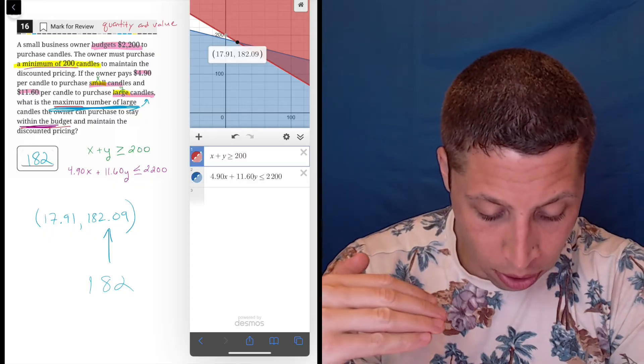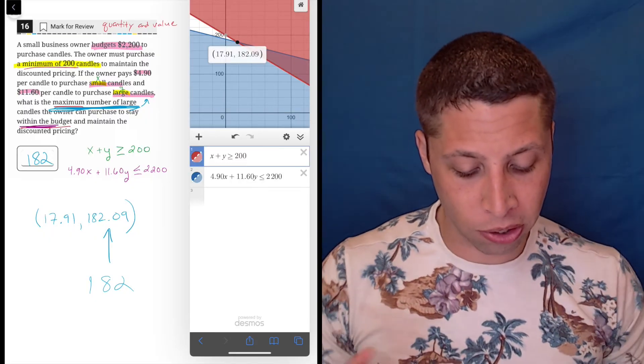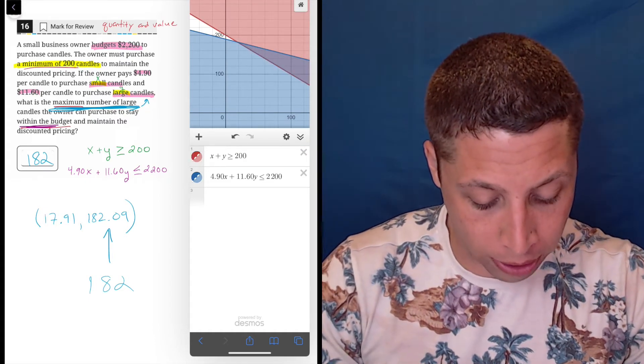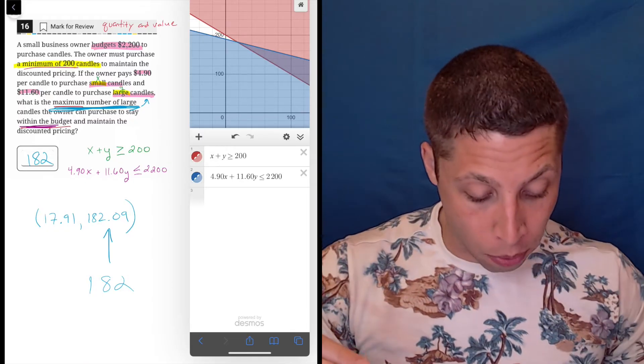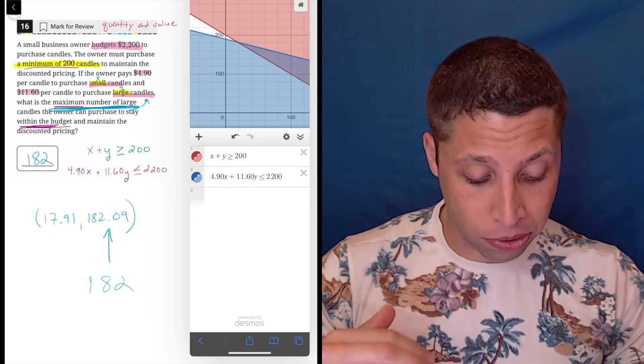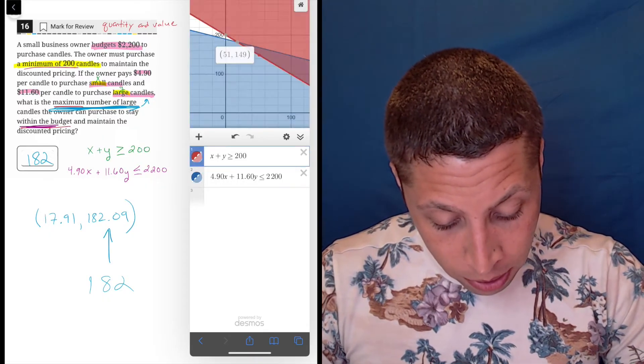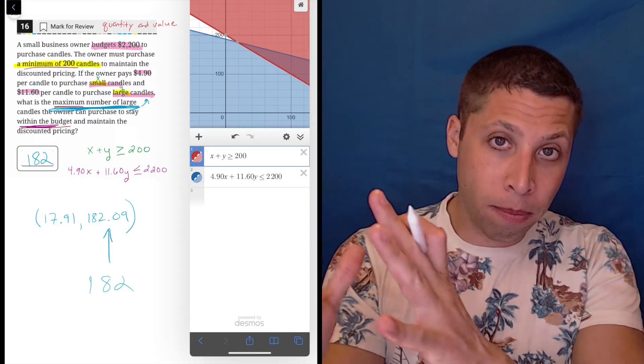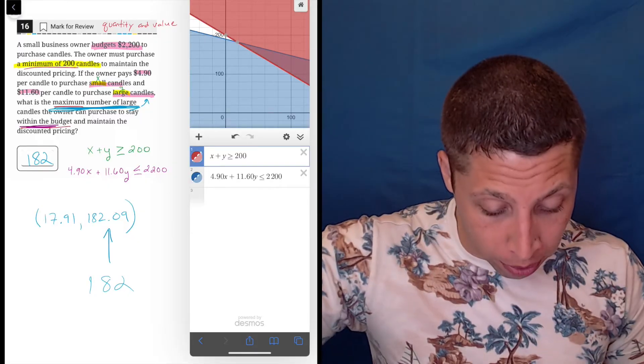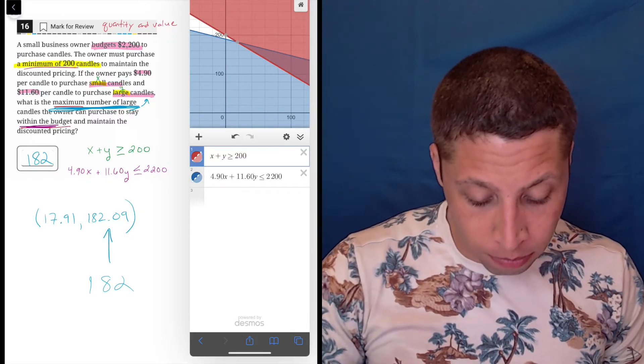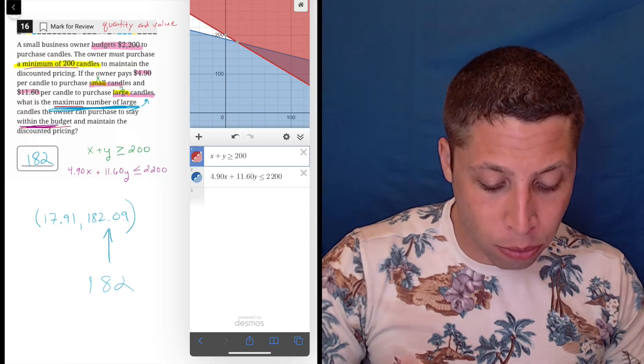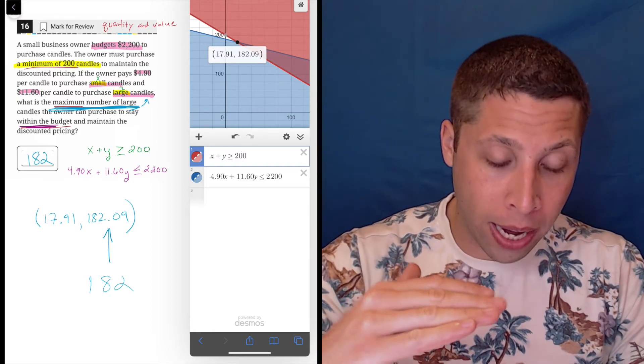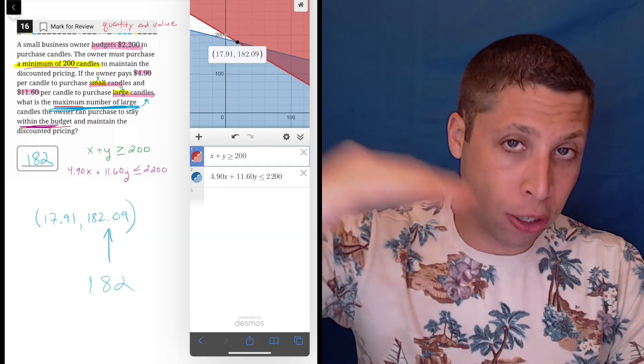And it has to do with the way that this purplish sliver is kind of built. So kind of try to picture it. It's hard. I can't draw on the graph, unfortunately. But if you notice, the sliver is kind of pointed down, right? Look at both the lines that make up that purple sliver. The blue line is going down. The red line is going down. And so if we're talking about the Y coordinate, we want to move down, right? We can't go higher. Because if we go to 183, we're going to have a problem where we're now outside of this. So the highest point is 182.09. 183 would put us outside of that shaded region.